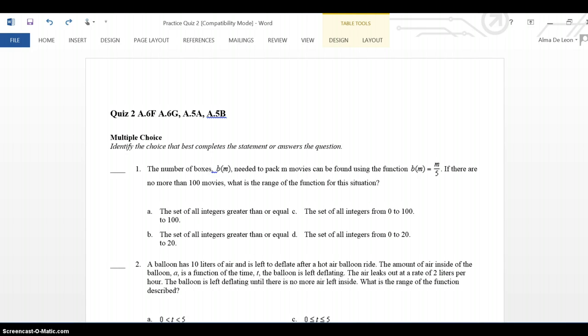Question number 1. The number of boxes BM needed to pack M movies can be found using the function BM equals M divided by 5. If there are no more than 100 movies, what is the range of the function for the situation?